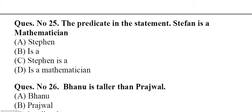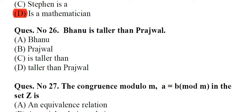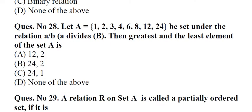Question number 25: The predicate in the statement 'Stefan is a mathematician'. A. Stefan, B. Is, C. Stefan is, D. Is a mathematician. Answer: D, Is a mathematician. Question number 26: Bhanu is taller than Pritchwell. A. Bhanu, B. Pritchwell, C. Is taller than, D. Taller than Pritchwell. Answer: C, Is taller than. Question number 27: The congruence modulo M, A equals B mod M, in the set Z is A. An equivalence relation, B. A partial ordering relation, C. Binary relation, D. None of the above. Answer: A, An equivalence relation.